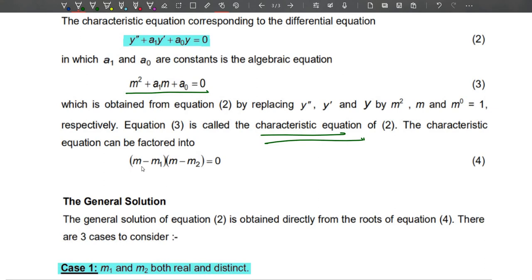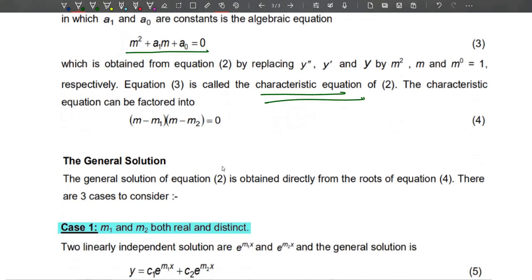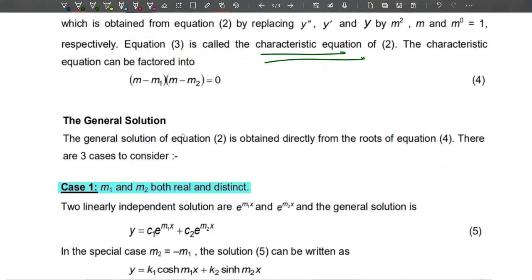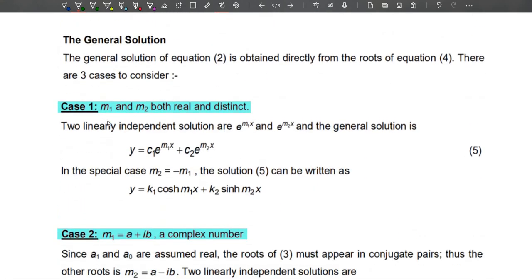This characteristic equation can be factored into (m - m_1)(m - m_2) = 0. And from here, the general solution will be in three cases. The first one is m_1 and m_2 are both real and distinct - that means you have real numbers and different values. So here, two linearly independent solutions are e^(m_1 x) and e^(m_2 x).